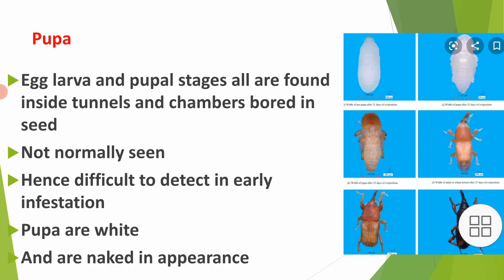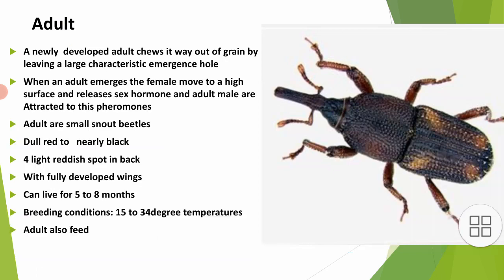Pupae are white in color and naked in appearance — they have no covering on their body, as you can see in the picture. A newly developed adult chews its way out of the grain, leaving a large characteristic emergence hole. When an adult emerges, the female moves to a high surface and releases sex hormones, and adult males are attracted to these hormones for breeding. Adults are small and bear a snout, which is why they are also known as snout beetles. They are dull red to nearly black in color.